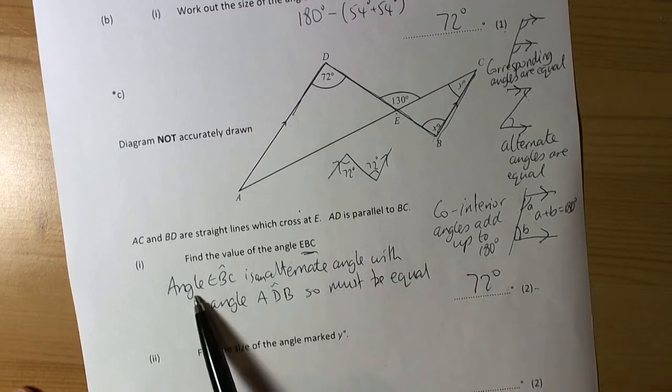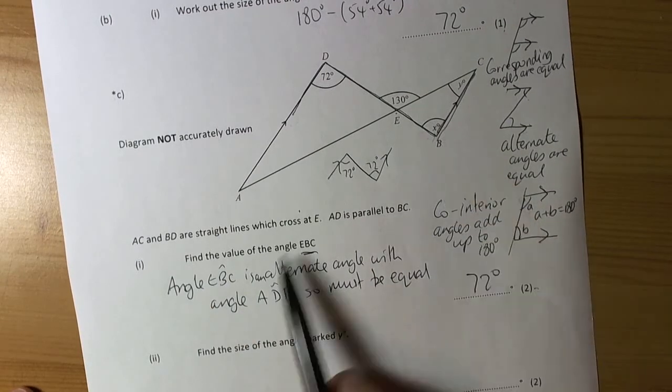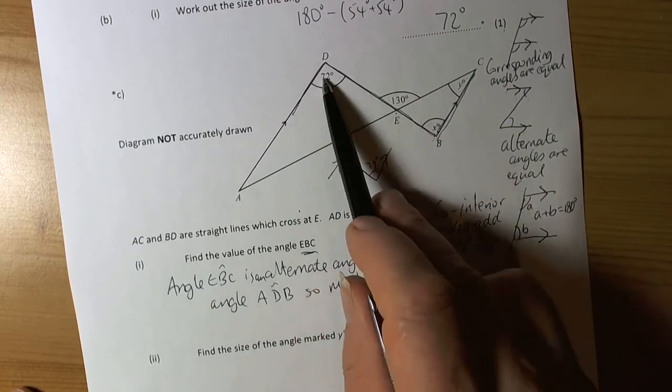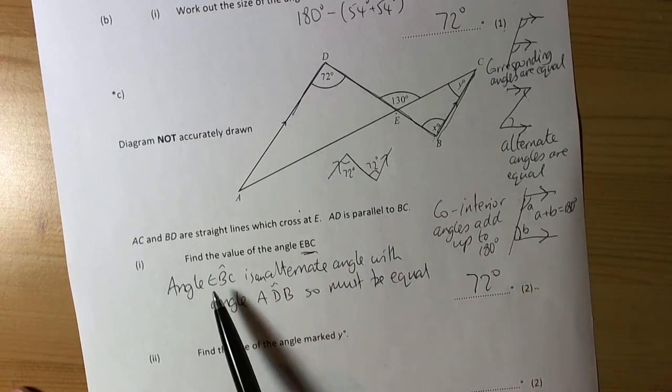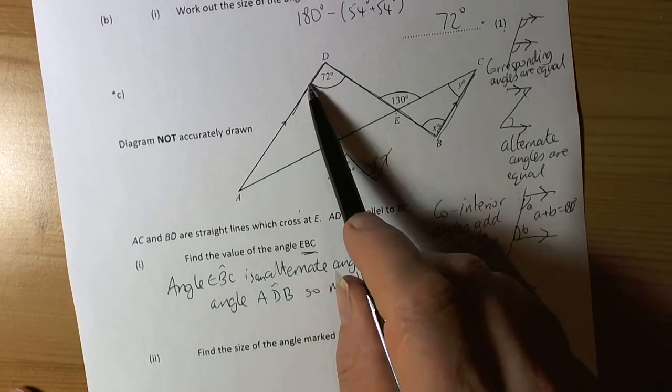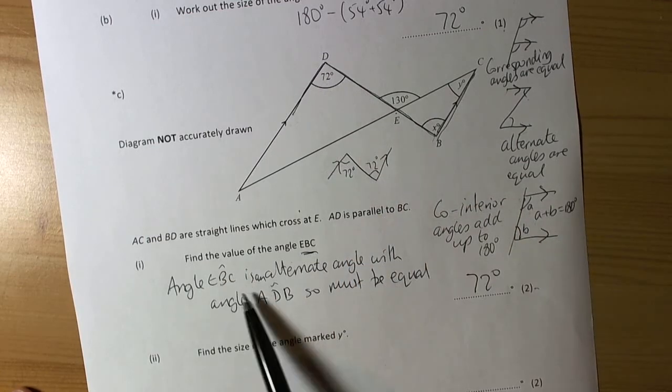So we have given a reason. We have said that the angle here is an alternate angle with this angle here. And we have used the proper language by giving the three letters and the word angle to show that we mean the angle trapped where the centre letter is.